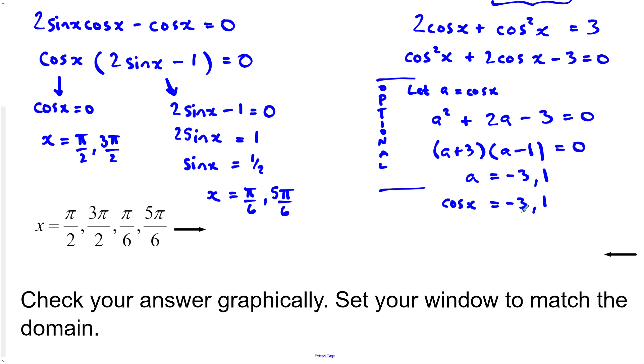Well, actually cos never equals negative 3. So there won't be a solution from that one. And so it's just cos equals 1. Where does cos equal 1? And remember, our domain restriction is in between 0 and 2 pi. That would be when x is equal to 0 or 2 pi.